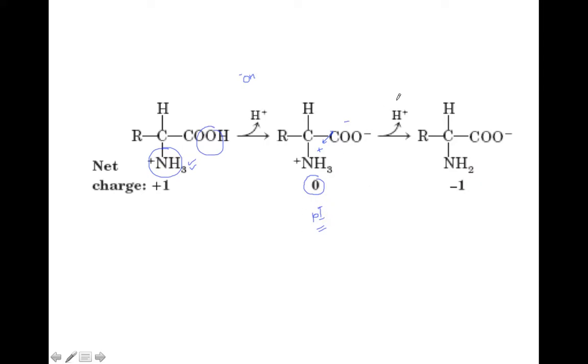This zero charge state is also called the isoelectric point (pI) of the amino acid. When we keep on adding hydroxyl ions, finally the H⁺ from the amine group also leaves, and now the charge becomes negative.